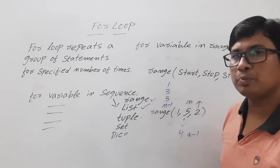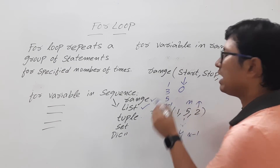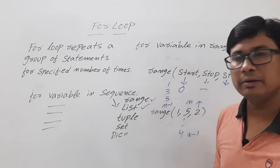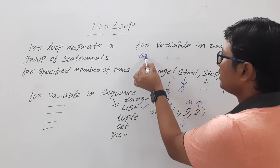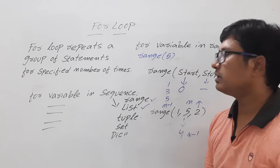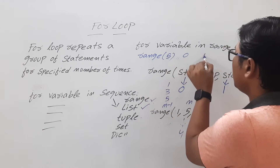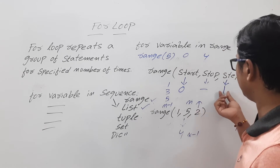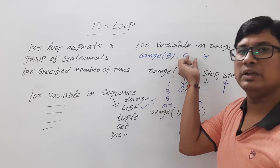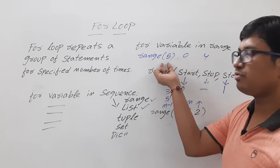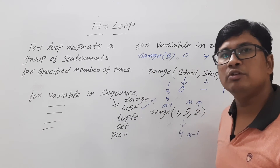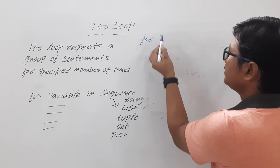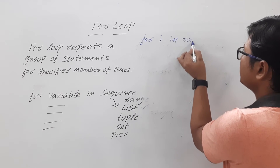If you don't provide the start, by default it will be zero. You must provide the stop. If you don't provide the step, by default it will be 1. So if you write range(5), it goes from 0 up to 4 — starting at 0, incrementing by 1: 0, 1, 2, 3, 4. If stop is n, it goes up to n minus one.